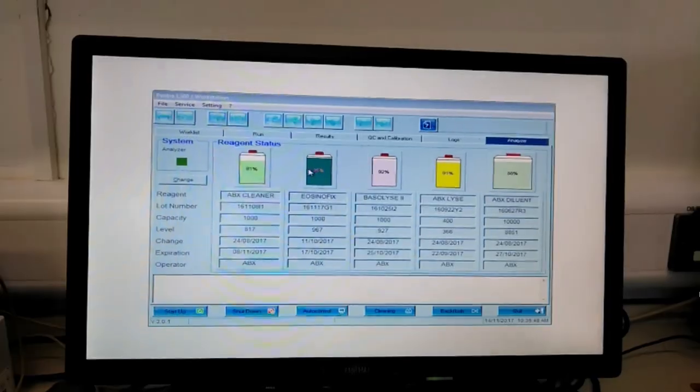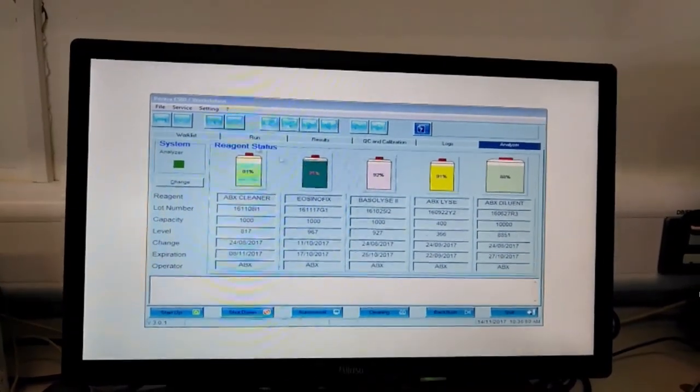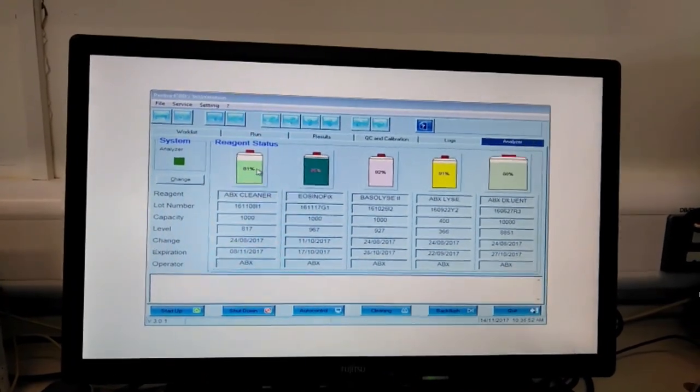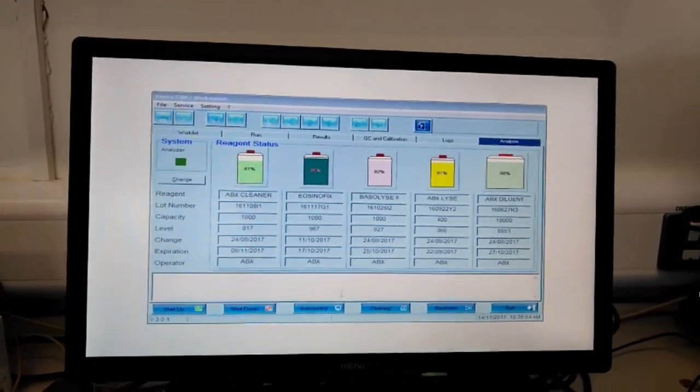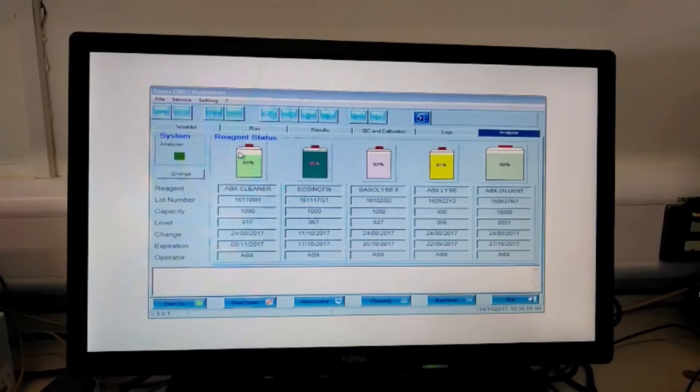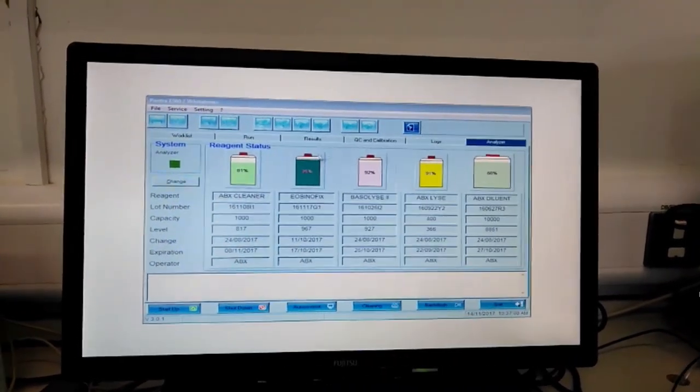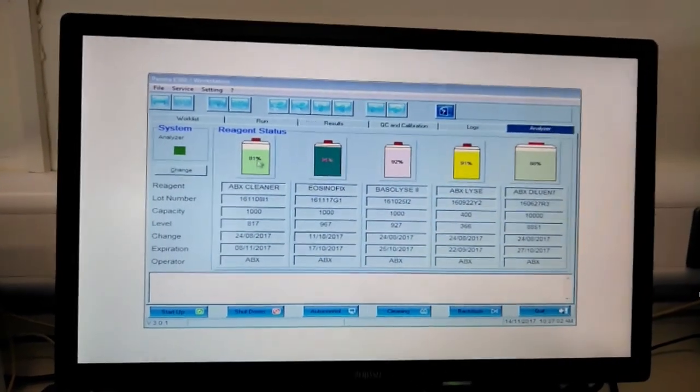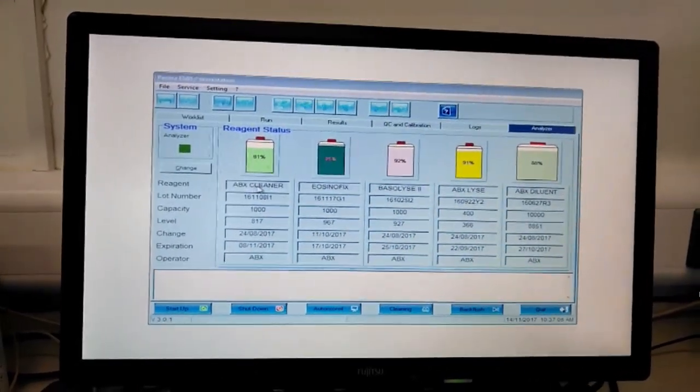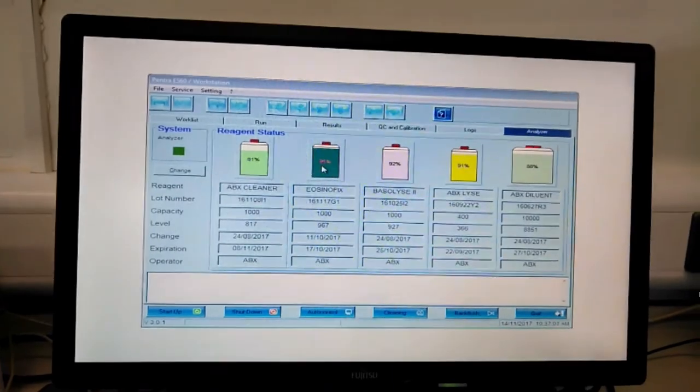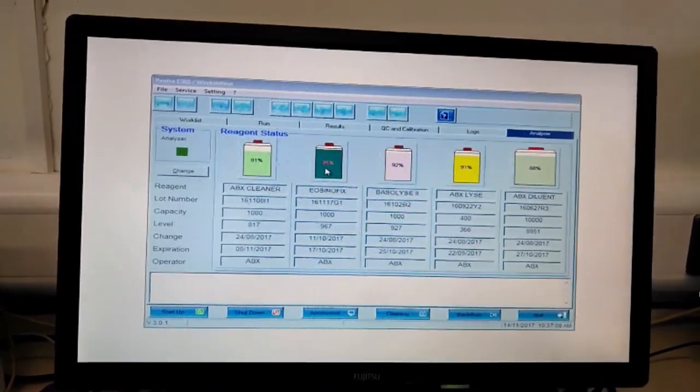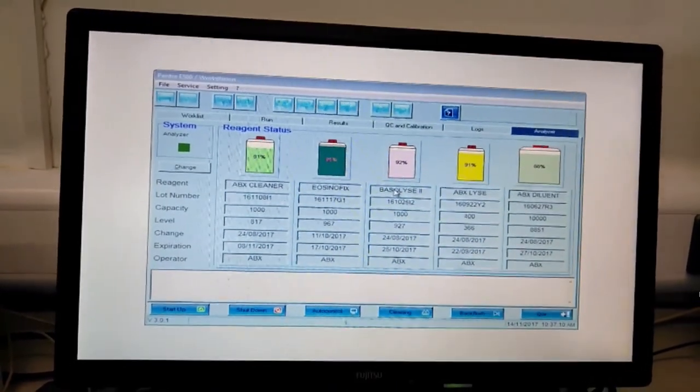This is the main screen when you open the program. There are various tabs but the default tab is analyzer. It shows remaining levels of all the reagents. For example, the remaining cleaner is at 81%, eosinofix is at 98%, basolized is at 92%, and so on.